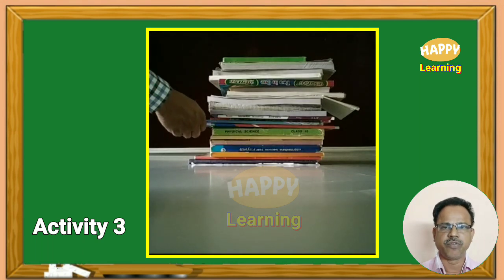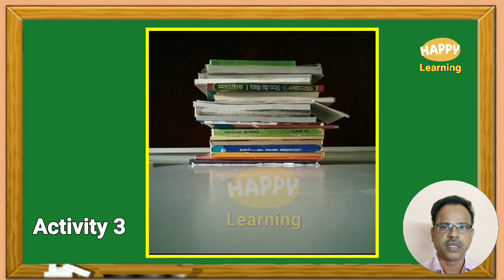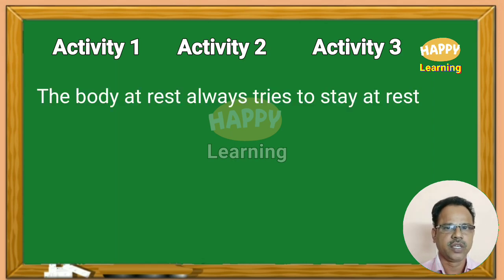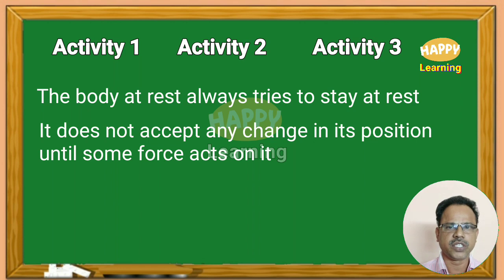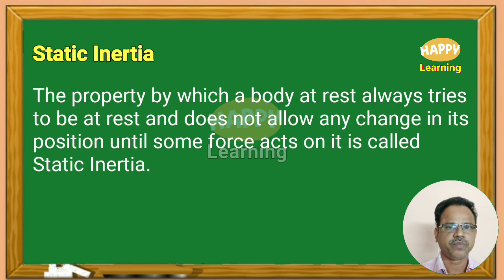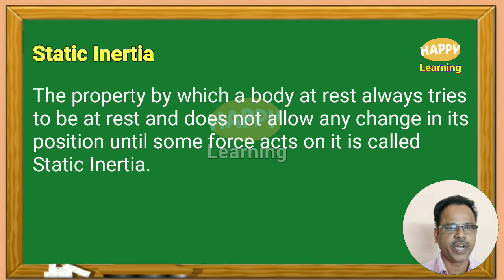Activity 3: Arrange a few books like a stack and gently remove one book. In activities 1, 2, and 3, the body at rest always tries to stay at rest. It does not accept any change in its position until some force acts on it. This property is known as static inertia — the property by which a body at rest always tries to remain at rest and does not allow any change in its position until some force acts on it.